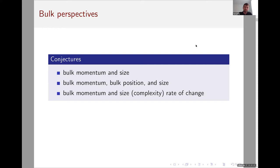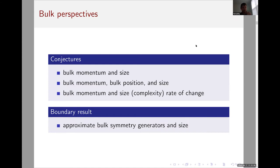There are also bulk reasons to study operator size. There are several conjectures in the literature about bulk momentum and size. The first conjecture was bulk momentum is equal to size. The next conjecture was bulk momentum and bulk position together determine size. The last conjecture was that bulk momentum is the rate of change of complexity, which was set roughly equal to size in some regimes. This work can be seen also as a way of trying to pin down these conjectures and make some concrete statement.